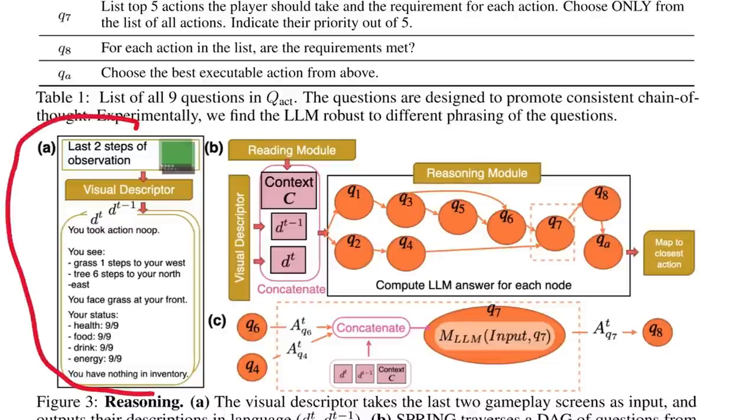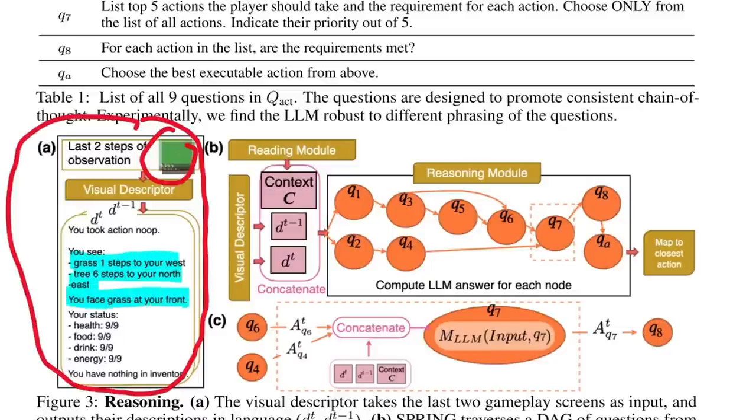Here we can see an example of the visual descriptor in action. So for these two frames, you can see that its description is you see grass one step to your west, tree six steps to your northeast, you face grass at your front. Your status, health 9 out of 9, food 9 out of 9, drink 9 out of 9, energy 9 out of 9. You have nothing in your inventory. And it also says the action that the agent took in the last step, which in this case was a no-op. So it basically has all you would want in an observation. It contains information about the player's surroundings, the status bar, and the inventory.